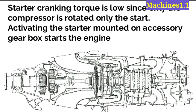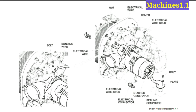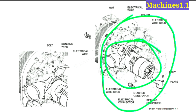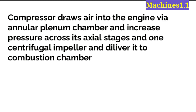Starter cranking torque is low since only the compressor is rotated during start. Activating the starter mounted on the accessory gearbox starts the engine. The starter generator, which is mounted on the accessory gearbox (AGB), helps start the engine. The AGB is installed in the front unit of the engine. Here is the diagram of the AGB, and this component is the starter generator.